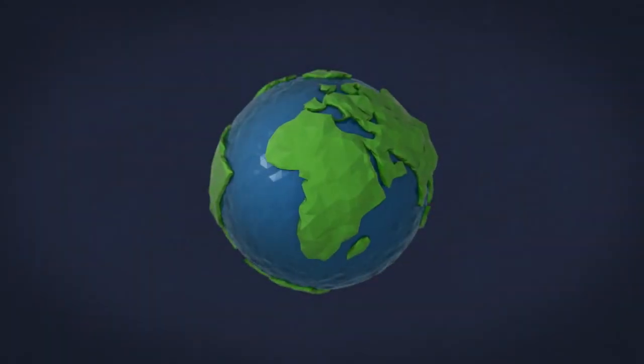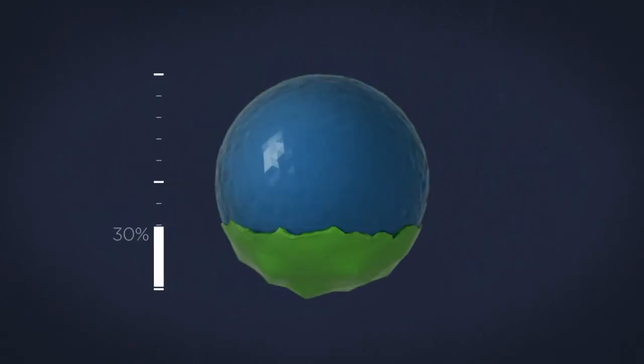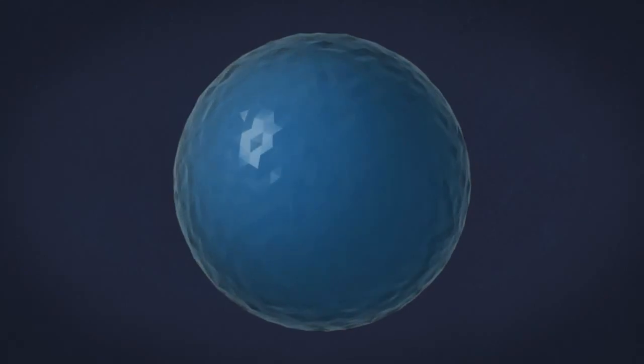On Earth there are currently 7 billion people living on 30 percent of its surface, and all of them are dependent on the remaining 70 percent: the ocean. The ocean is the largest source of food in the world. Fish is the main daily source of protein for 1.2 billion people.